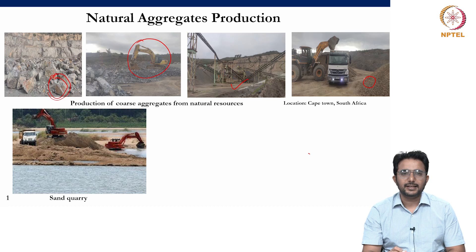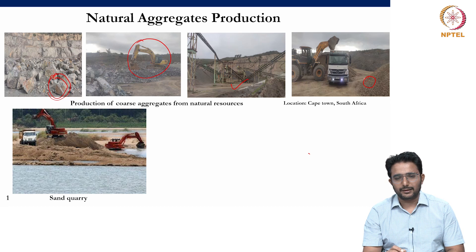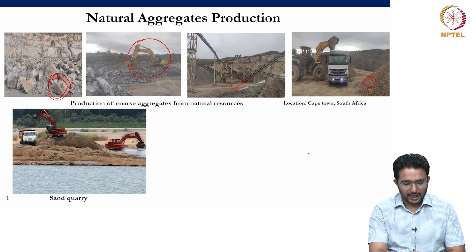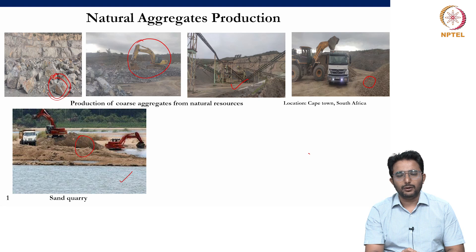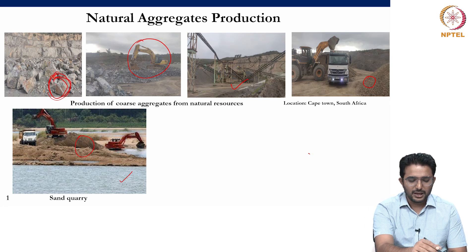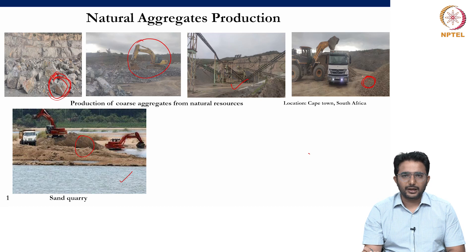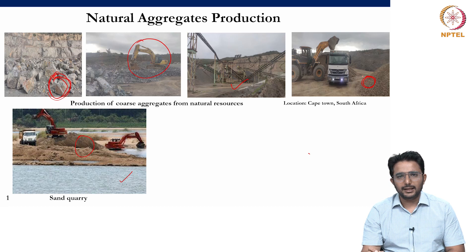As far as fine aggregates are concerned, river sand was traditionally used. Rivers have a lot of sediments, and wherever the water level is lower, river sand can be extracted with excavators. But right now, there is quite a scarcity of river sand all around the globe. Therefore, industries have started using manufactured sand, which is produced when big crushed boulders are further reduced to below 4.75 mm and used instead of river sand.